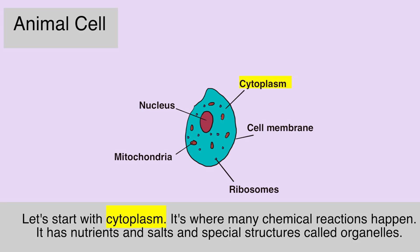Let's start with cytoplasm — it's where many chemical reactions happen. It has nutrients and cells, and special structures called organelles.